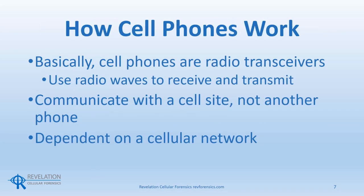How cell phones work. Cell phones are radio transceivers. They use radio waves to receive and transmit voice calls and data communications. Instead of using one frequency to send and receive, like a walkie-talkie or a CB radio, cell phones use one frequency to transmit and another frequency to receive. Also, instead of communicating directly with another radio transceiver, cell phones communicate with cell sites directly and depend on a cellular network to function.